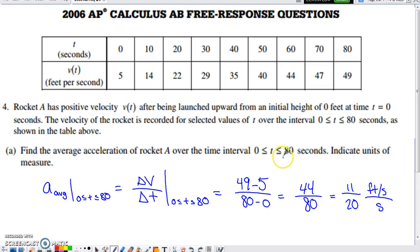We're going to do that on the interval from 0 to 80. So we have 80 minus 0 in the denominator and then v of 80, which is 49, minus v of 0, which is 5 in that numerator. That'll simplify to 11/20. You can leave your answer like this. It does ask for units of measure. We're looking at feet per second as the units in this numerator, divided by seconds in the denominator. So we're looking at feet per second per second or feet per second squared.